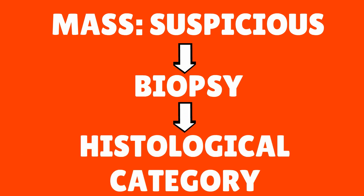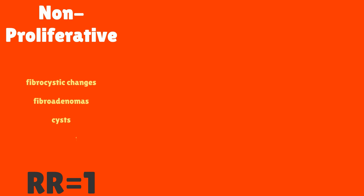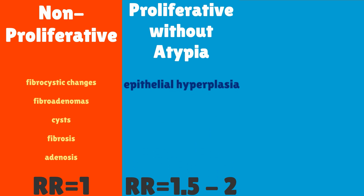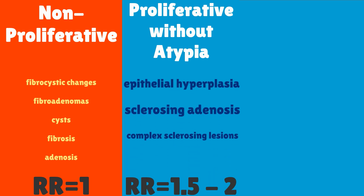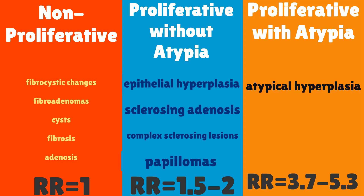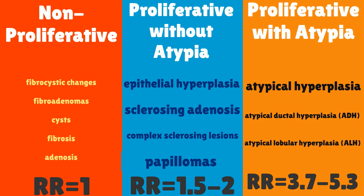There are three histological categories of benign breast masses, classified based on the degree of cellular proliferation and atypia. Non-proliferative masses have a relative risk of developing breast cancer of 1; these include fibrocystic changes, fibroadenomas, cysts, fibrosis, and adenosis. Proliferative masses without atypia have a relative risk of 1.5 to 2, and include epithelial hyperplasia, sclerosing adenosis, complex sclerosing lesions, and papillomas. The third category is proliferative with atypia; if cells have atypical hyperplasia, the relative risk of developing breast cancer is 3.7 to 5.3, including atypical ductal hyperplasia (ADH) and atypical lobular hyperplasia (ALH).